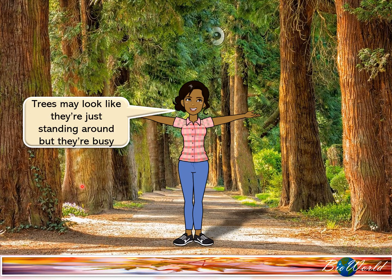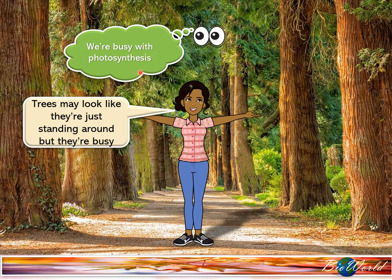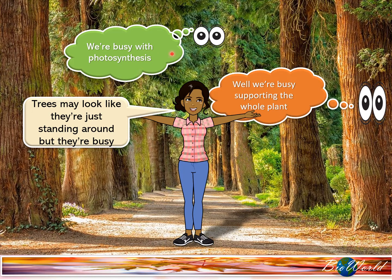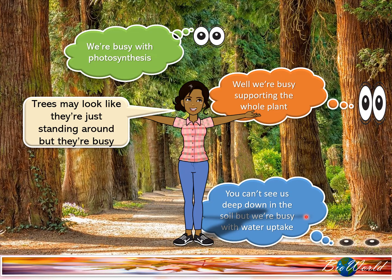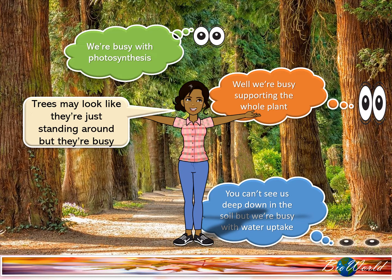The leaves, for instance, are busy carrying out photosynthesis. The stems are busy supporting the whole plant, while the roots that are hidden underground are busy transporting water. So in today's episode of BioWorld, I'm going to discuss the role of specialized plant cells. So come join me.